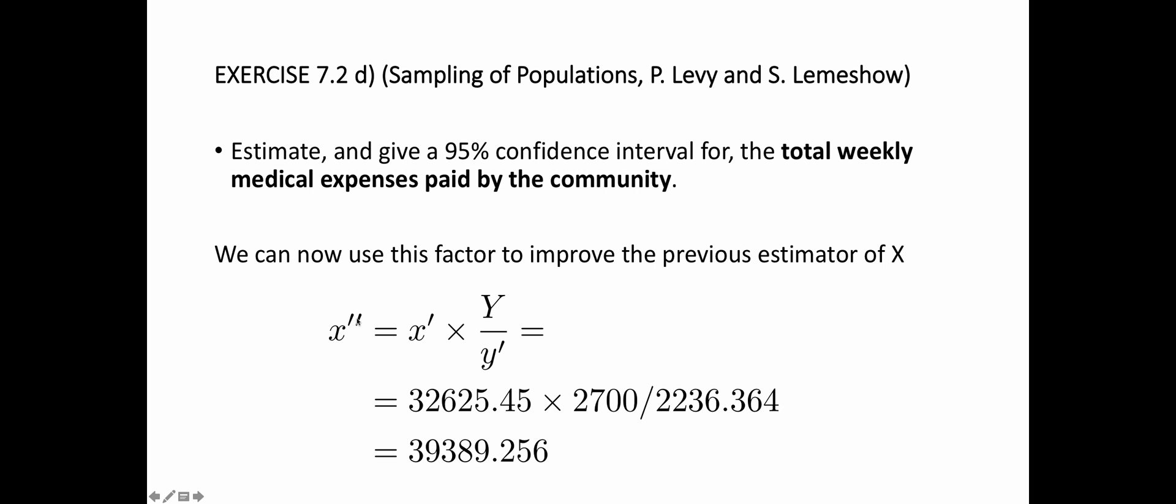I'm going to create a new estimator based on the previous one of the total medical expenses, and now adjusting it, correcting it by this factor, that is the correction factor for a variable for which I know the true value and I get an estimate from the sample. This should, in principle, give me a better estimate, especially if x and y are correlated, which is the case, because the larger the family, the larger the medical expenses, just because there's more people in the family.